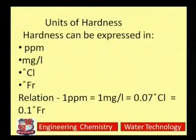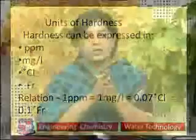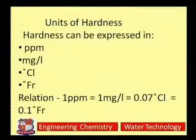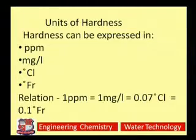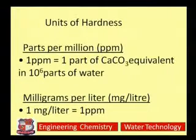Expression of hardness is always done in CaCO3 equivalent but can have different units: ppm (parts per million), milligram per liter, degree Clark, or degree French. Parts per million is defined as one part of CaCO3 equivalent hardness present per 10⁶ parts of water.